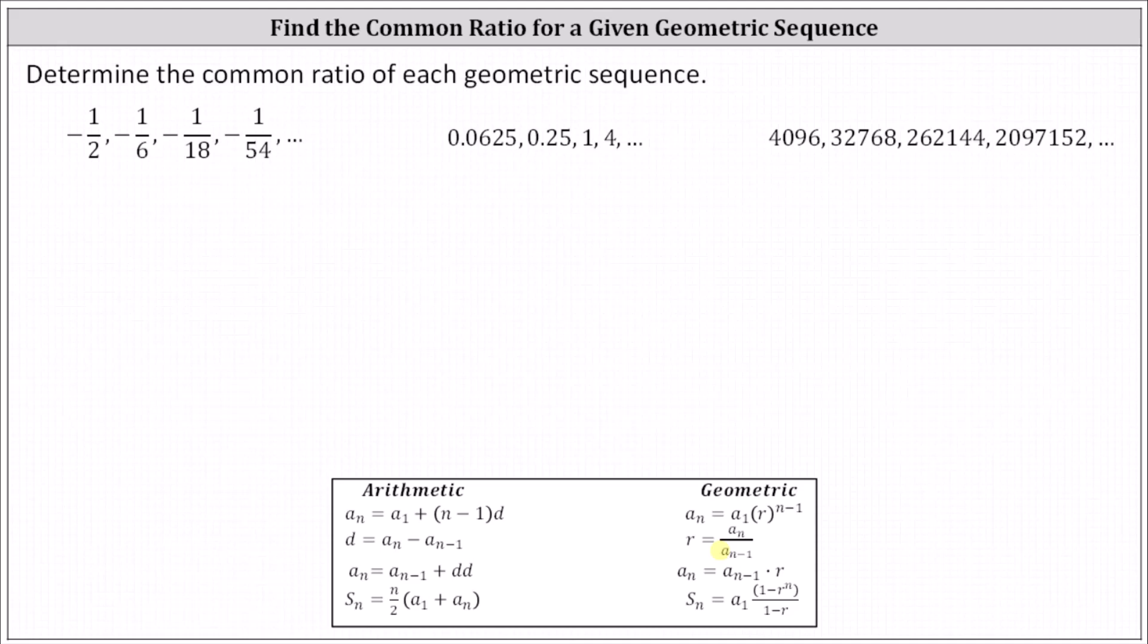Looking at the first sequence, let's use the first two terms, or a sub one and a sub two, which indicates we can determine r by dividing a sub two by a sub one, which is equal to negative one sixth divided by negative one half.